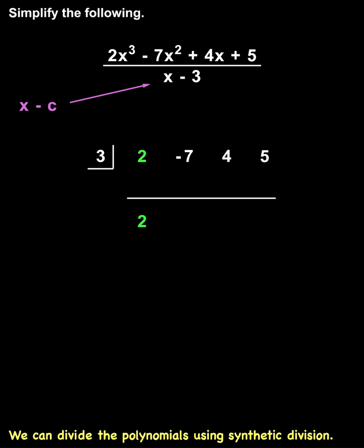First, we bring down the 2. Next, we multiply the 3 in the box times 2 to get 6, and we put the 6 under the negative 7.